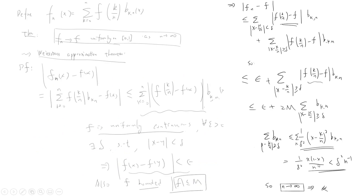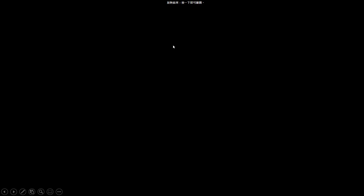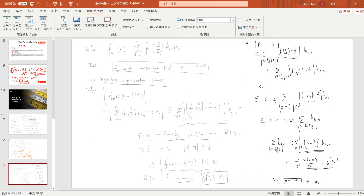So the second term is bounded by 2M times (1/δ^2) times x(1-x)/n ≤ 2M/(4nδ^2). Since x(1-x) ≤ 1/4 on [0,1], this is less than 1/(nδ^2). By choosing n sufficiently large, we can suppress this term. Thus for any ε > 0 we can find N such that |f - f_n| is uniformly small on [0,1] as n → ∞, completing the proof.